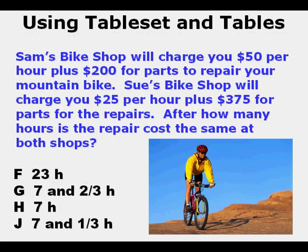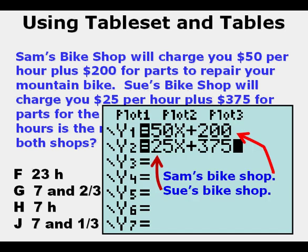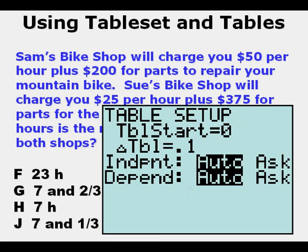Now we'll apply the use of Table Set on this problem. Sam's Bike Shop will charge you $50 per hour plus $200 for parts to repair your mountain bike. Sue's Bike Shop will charge you $25 per hour plus $375 for parts. After how many hours is the repair cost the same at both shops? We enter the two functions in our function editor: Sam's is y1 equals 50x plus 200, and Sue's is y2 equals 25x plus 375. Here we are now in our Table Set menu.